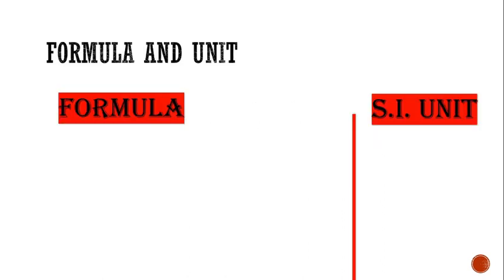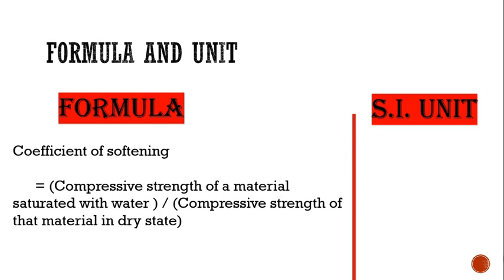Let us move towards the formula and unit. The formula to find coefficient of softening is the compressive strength of a material saturated with water, divided by the compressive strength of that material in its dry state.